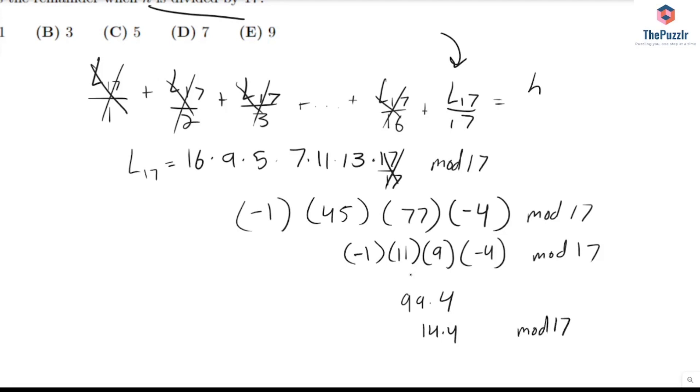This is just going to give us 28 plus 28, which is 56 mod 17. And we know that this is equal to 5 mod 17, because 51 is a multiple of 17.